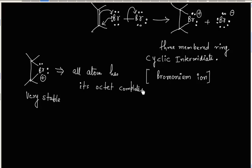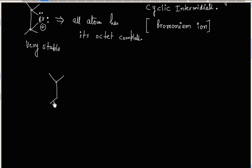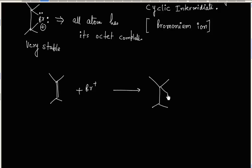This is the fastest step — that is, addition of Br⁺. Simply, the fastest step is addition of electrophile. This is Step 1: addition of electrophile.